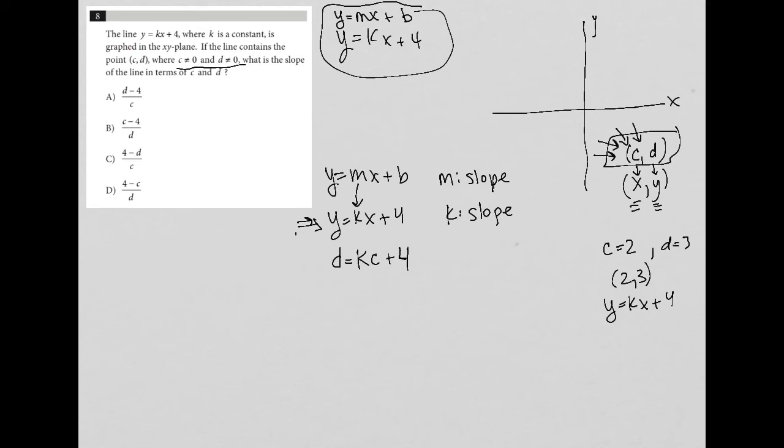Then I could just plug in 3 for y, plug in 2 for x, and then I only have k as the missing variable, or in this case constant, to solve for, and that would be my slope.